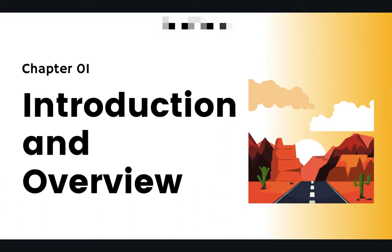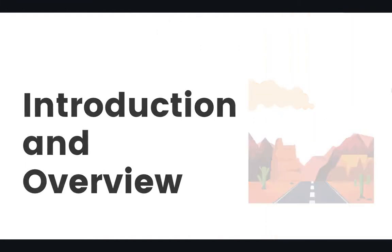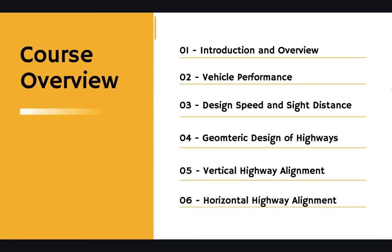In Chapter 1, the current chapter, we will go over the topics that we will be covering in this course and introduce some of the basic concepts related to highways and transportation engineering in general. Chapter 2 is about vehicle performance on the road and its impact on highway design. Chapter 3 covers design speed and sight distance. Chapter 4 includes elements of geometric design, with vertical and horizontal alignment discussed in Chapters 5 and 6.